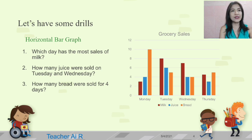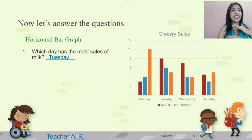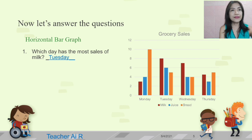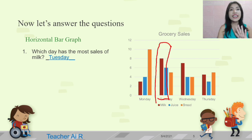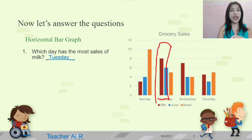For number one, which day has the most sales of milk? The milk is in maroon, and the most sales is the highest bar of maroon. The bar graph with the highest sales for milk is on Tuesday — it has eight, while on Wednesday it has only seven. So, the most sales of milk is on Tuesday.